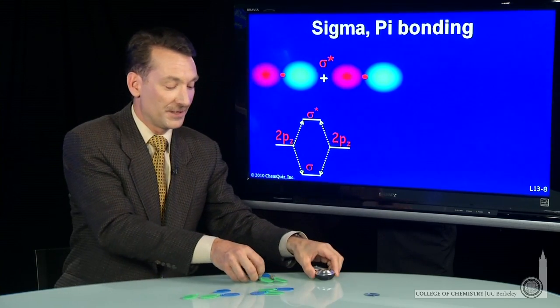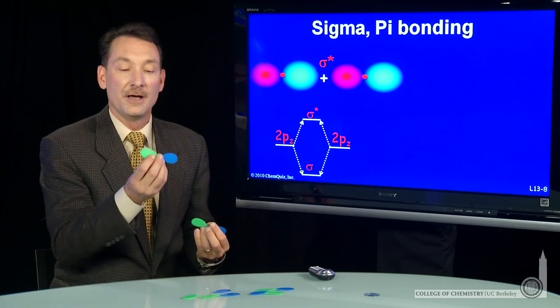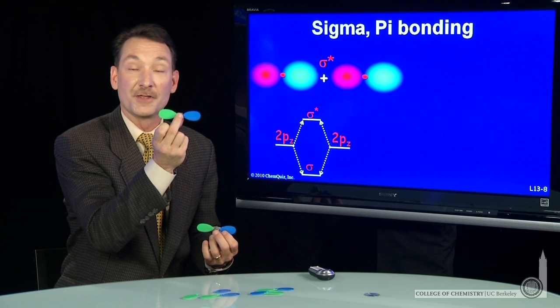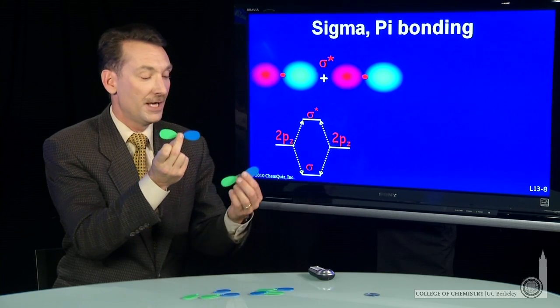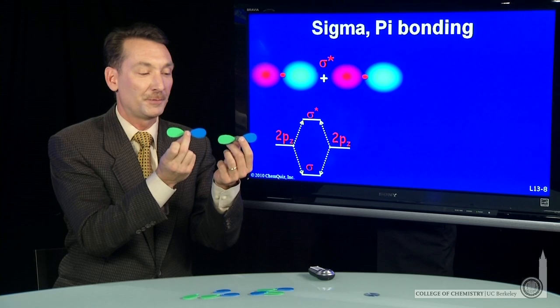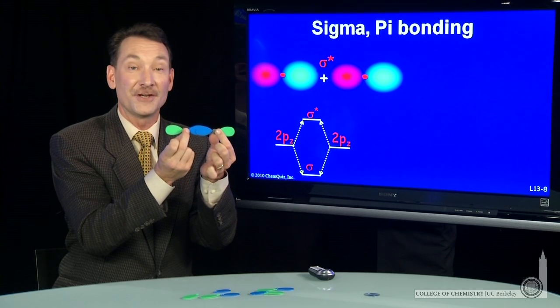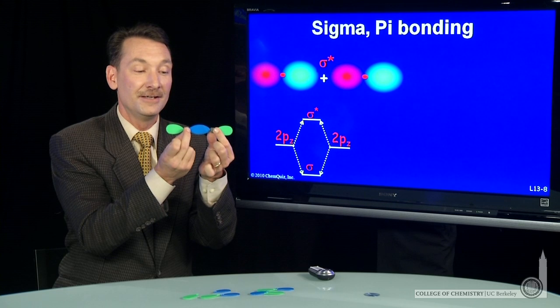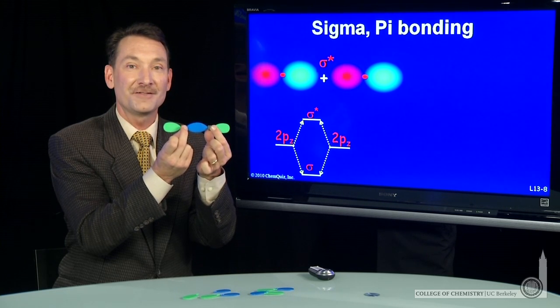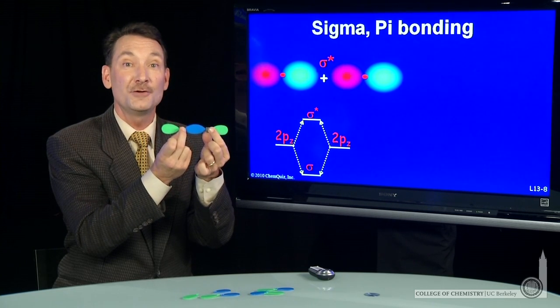I can show you that with these little models. Here comes one atom with a pz orbital and another atom with a pz orbital. Multiply this one by negative 1 so that I get constructive interference. And I add to form constructive interference between the two nuclei.